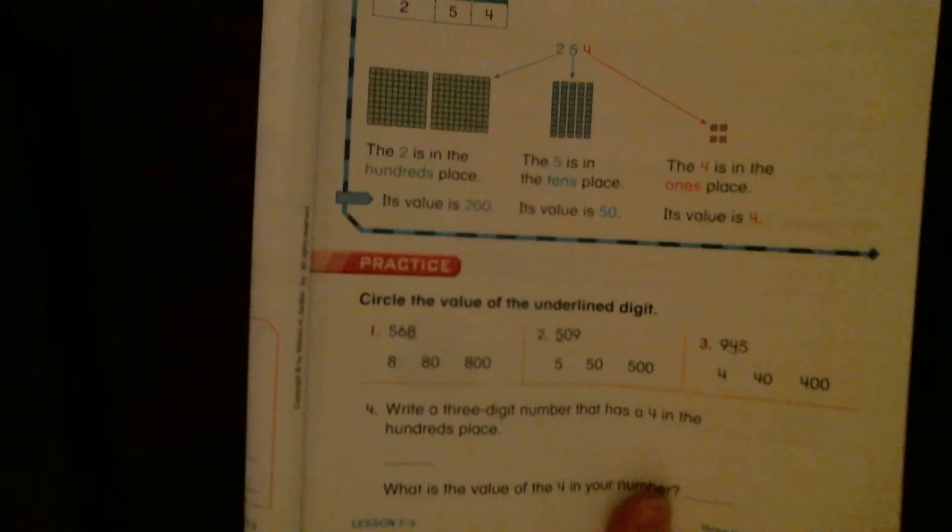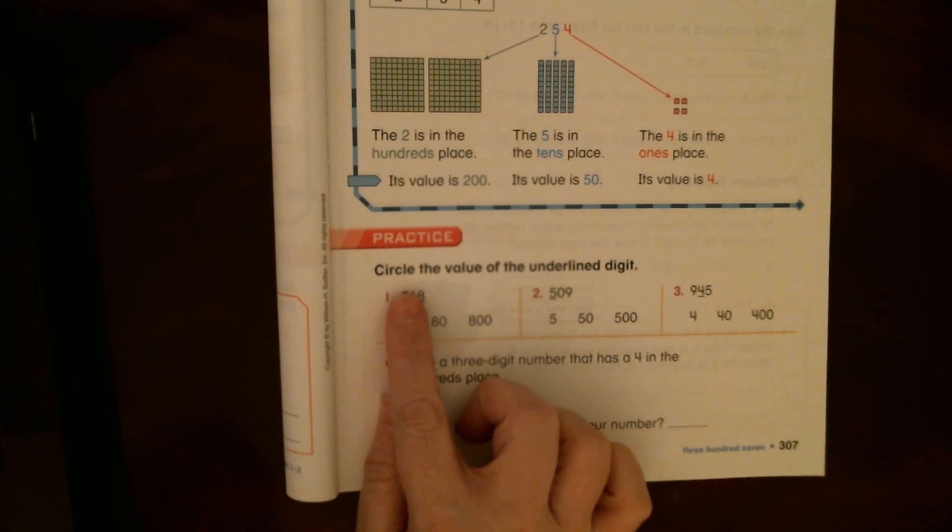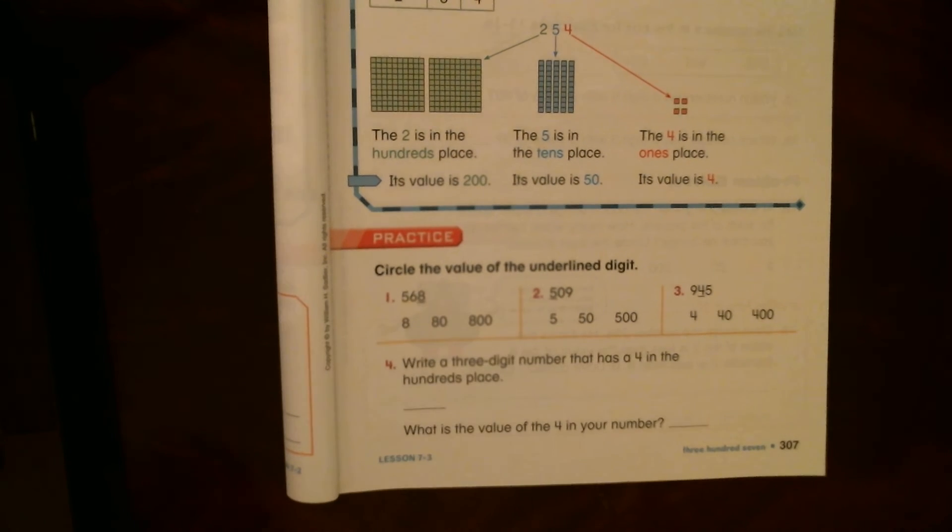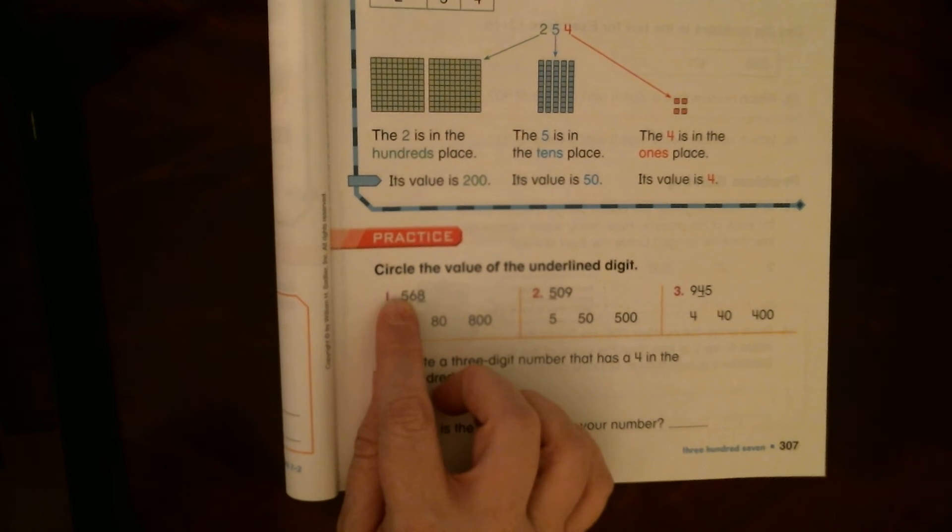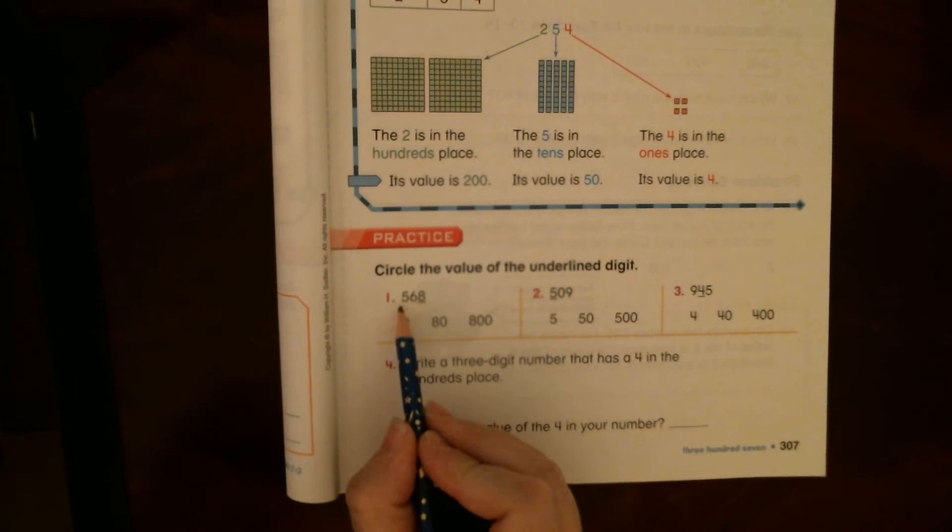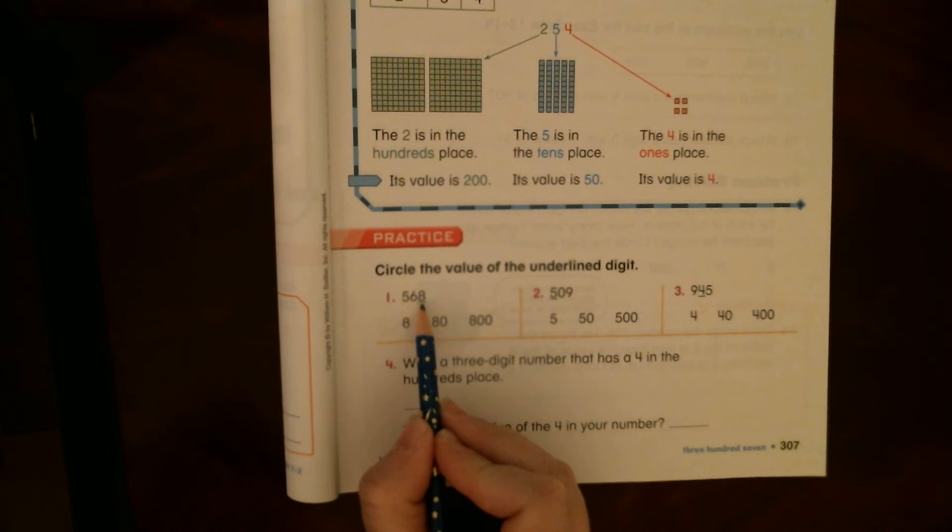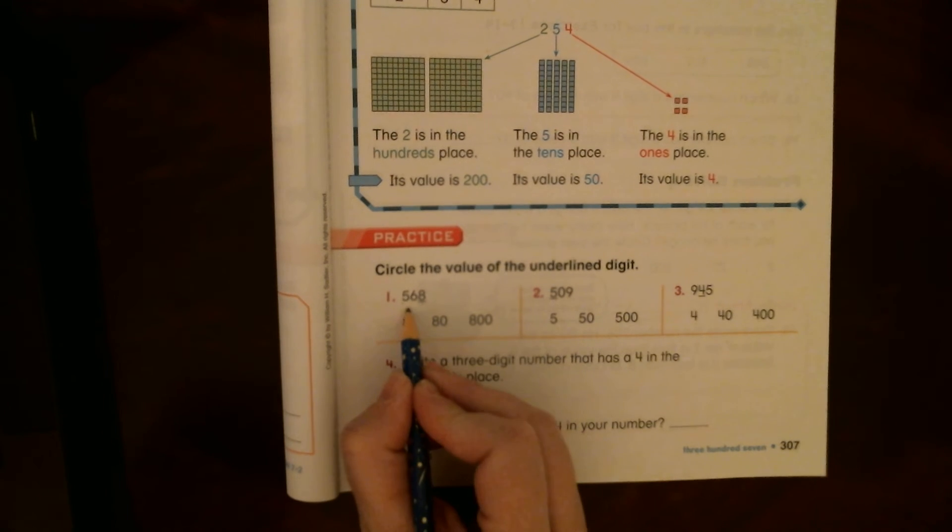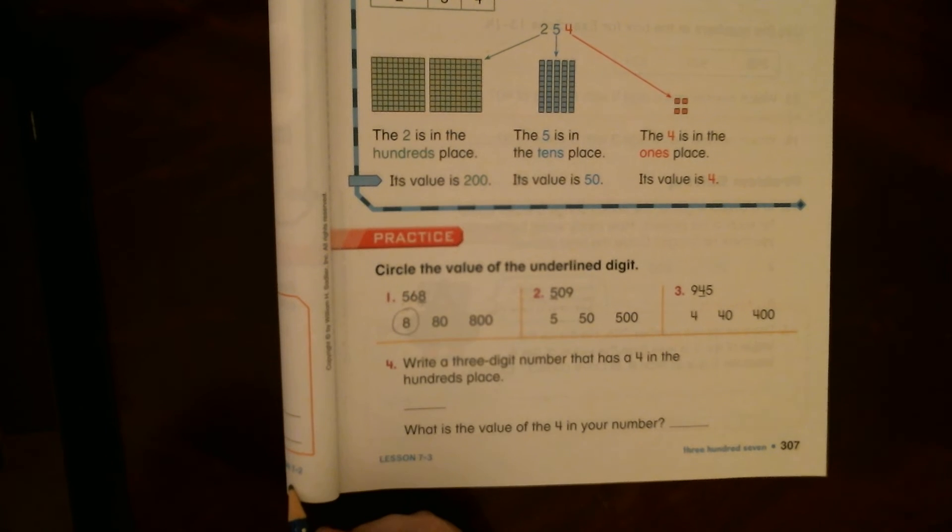So what you guys are going to do right now, you're going to look at the underlined digit, and you're going to decide how much it's worth. Is it in the hundreds place, the tens place, or the ones place? So 568, the eight is in the ones place. If I have eight ones, it's worth eight. Okay? All right, so that's what you guys are going to do.